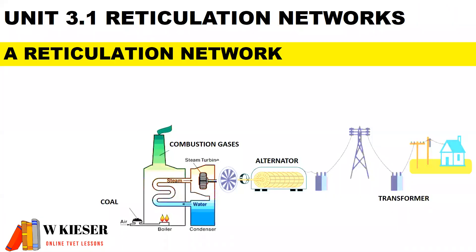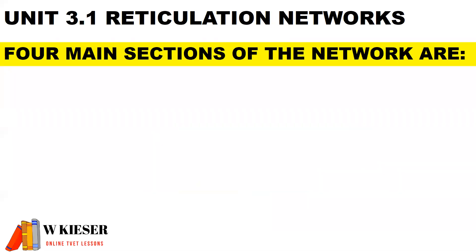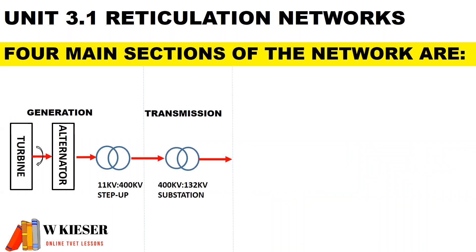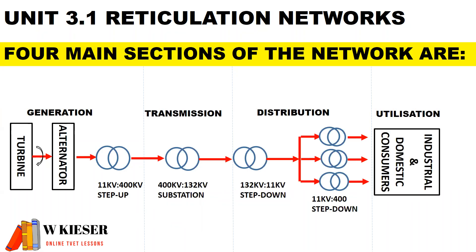A reticulation network includes all conductors and infrastructure which delivers electricity to consumers. There are four main sections of the network: the generation, the transmission, distribution, and utilization.